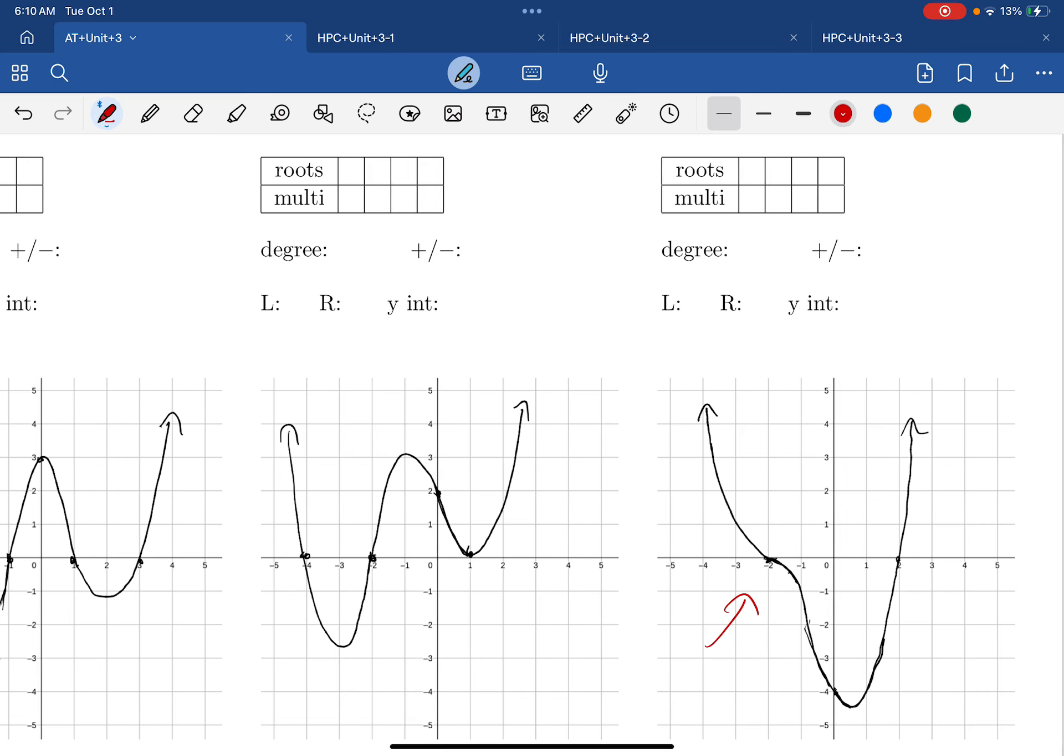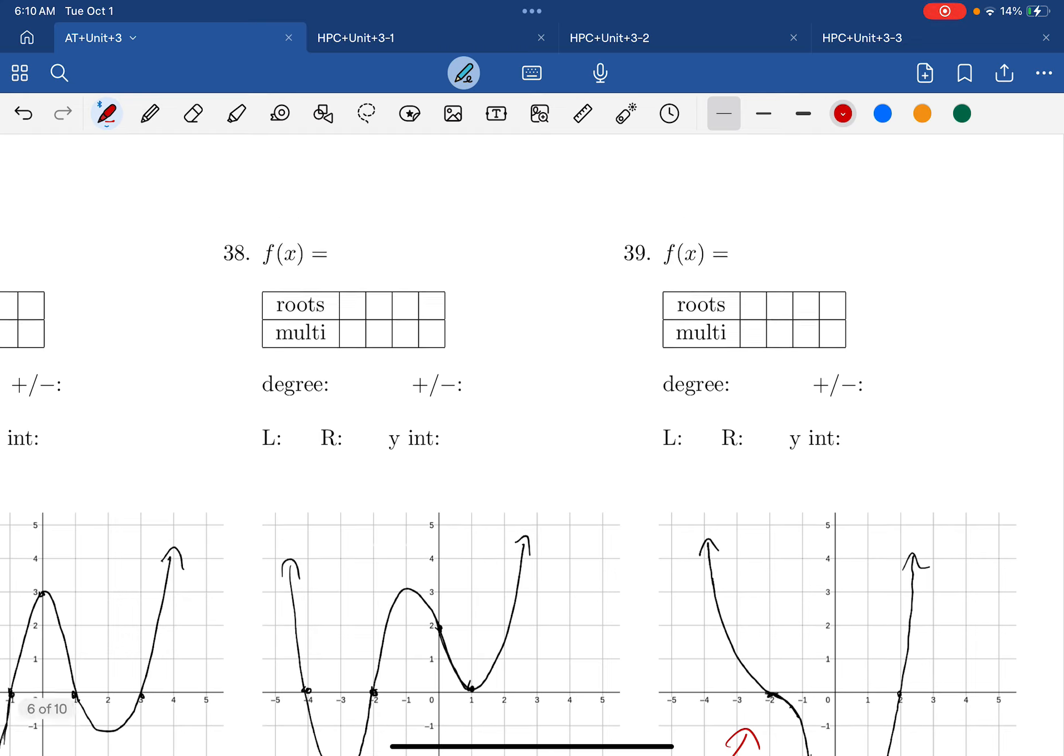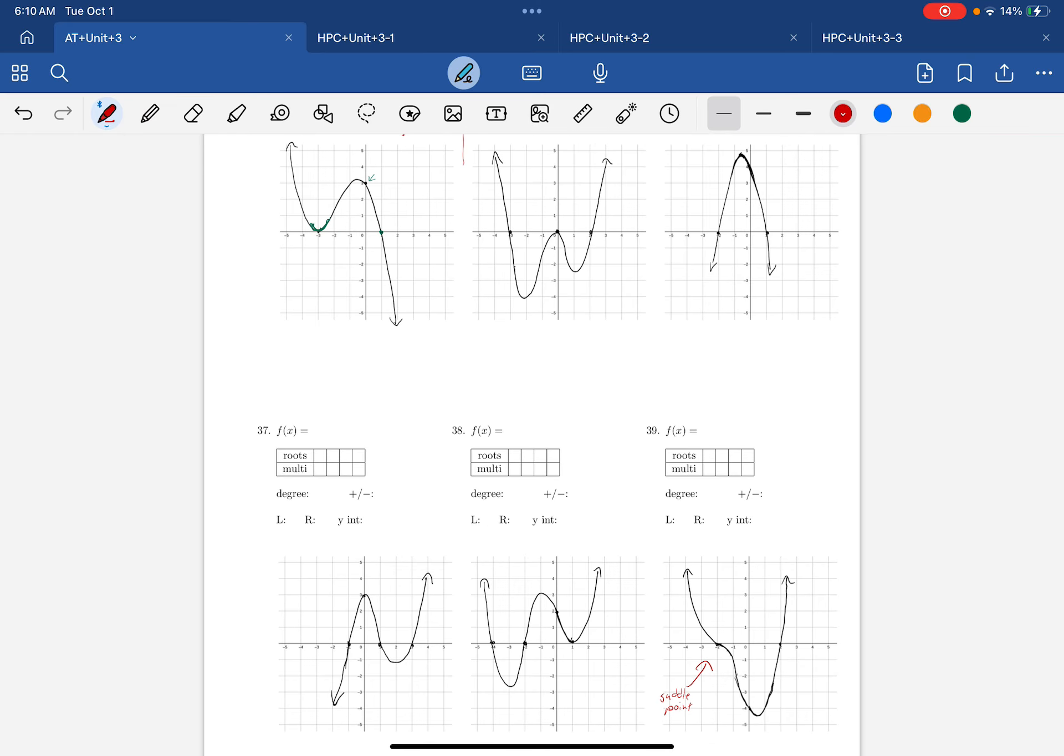So that right there is going to have a multiplicity, it's a saddle point, right? This thing right here is the saddle point. Saddle points are odd multiplicities. We're just going to go one, two, or three. This one's going to be the three. In fact, that's the only three on this work. And then you're done.